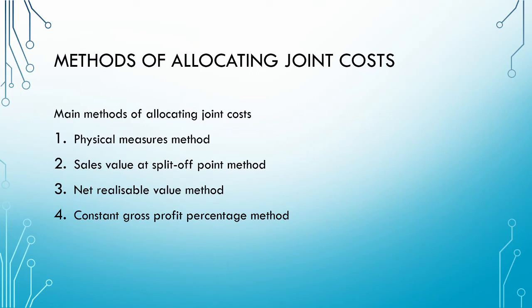An important consideration at this point is how do we choose which method to apply? As we work through the series, it is important to remember that no matter how sophisticated a method might look, they are all arbitrary in nature and there is no cause and effect relationship, as we cannot separately trace the costs to the products because the products are not separately identifiable. Because we cannot base the allocation on cause and effect relationships, we rather need to base it on benefits received or fairness criteria, and which method makes the most sense in light of what we are producing.